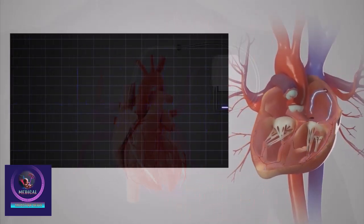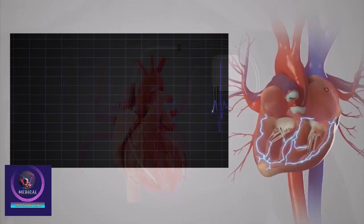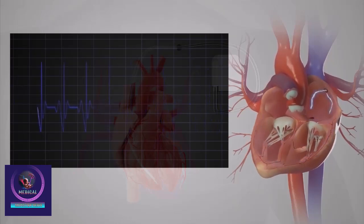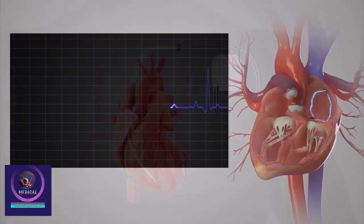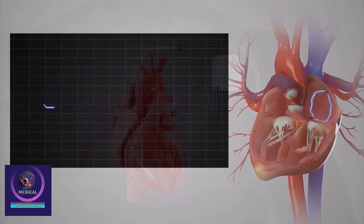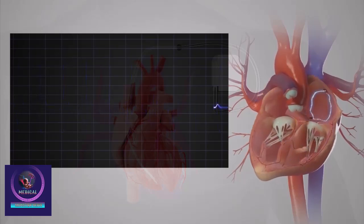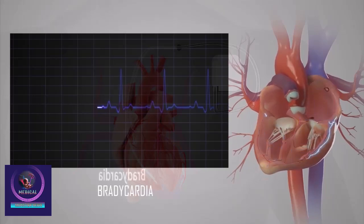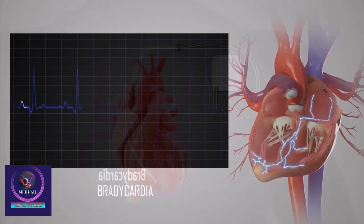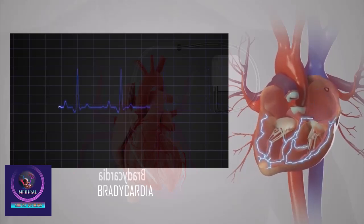When problems develop in the heart's conduction system, the SA node may not work normally. This can cause the heart to beat too quickly, too slowly, or irregularly. An abnormal heart rate is known as a dysrhythmia. Bradycardia is a dysrhythmia with a heart rate below 60, which can be life-threatening. Because it is so dangerous, bradycardia is one of the most common reasons for pacemaker insertion.